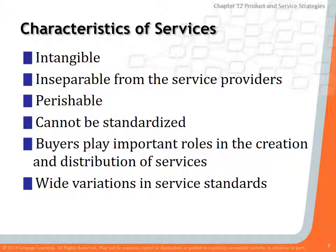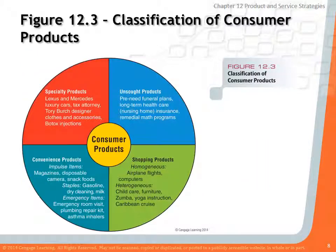Now let's talk about the classification of consumer products. You can classify consumer products into four key categories: specialty products, unsought products, shopping products, and convenience products.